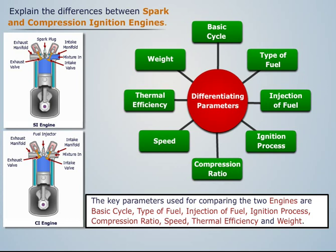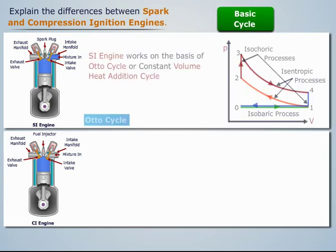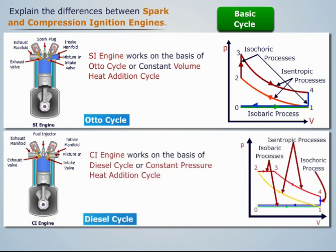Let us compare spark and compression ignition engines on these parameters one by one. The spark ignition engine works on the basis of the Otto cycle, or constant volume heat addition cycle, whereas the compression ignition engine works on the basis of the diesel cycle, or constant pressure heat addition cycle.